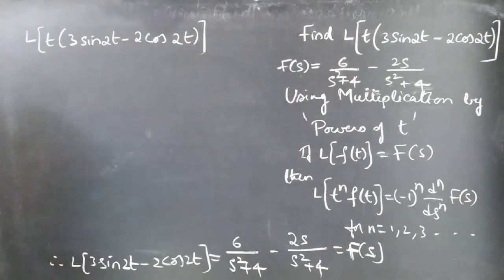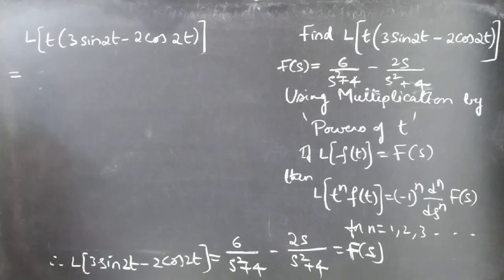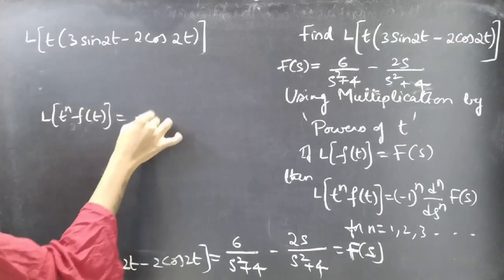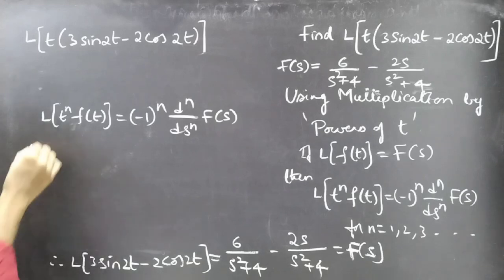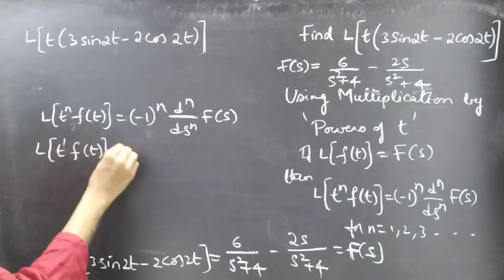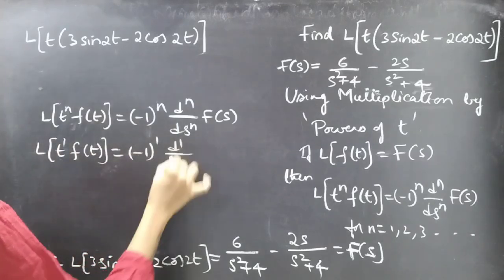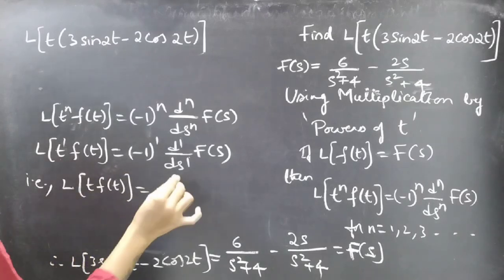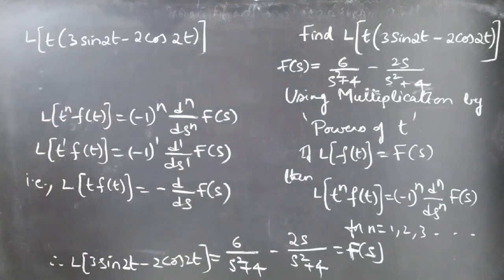Now coming to L of t times [3 sin(2t) minus 2 cos(2t)]. The formula is: L of t^n times f(t) equals (-1)^n times d^n/ds^n of F(s). For n equal to 1, this becomes L of t·f(t) equals minus 1 times d/ds of F(s), that is minus d/ds of F(s).